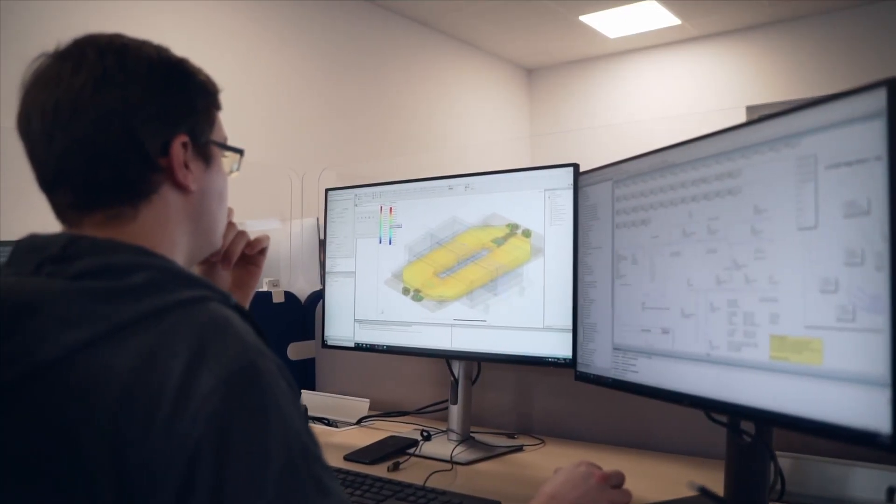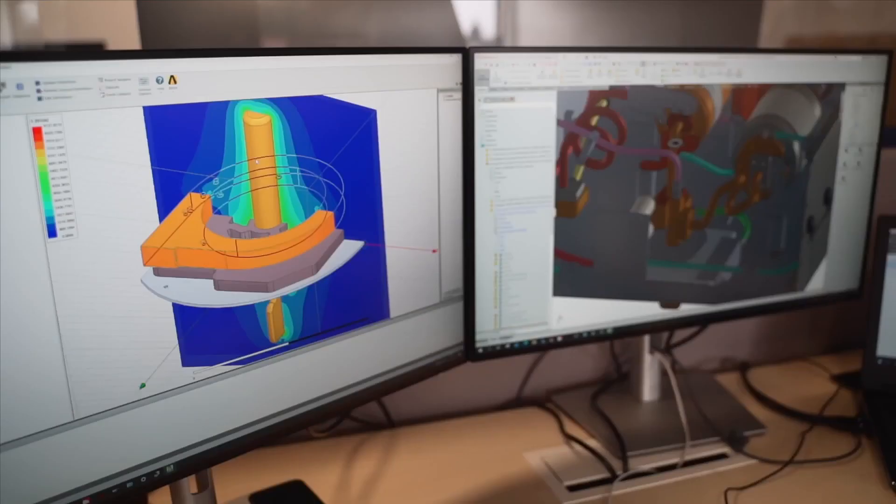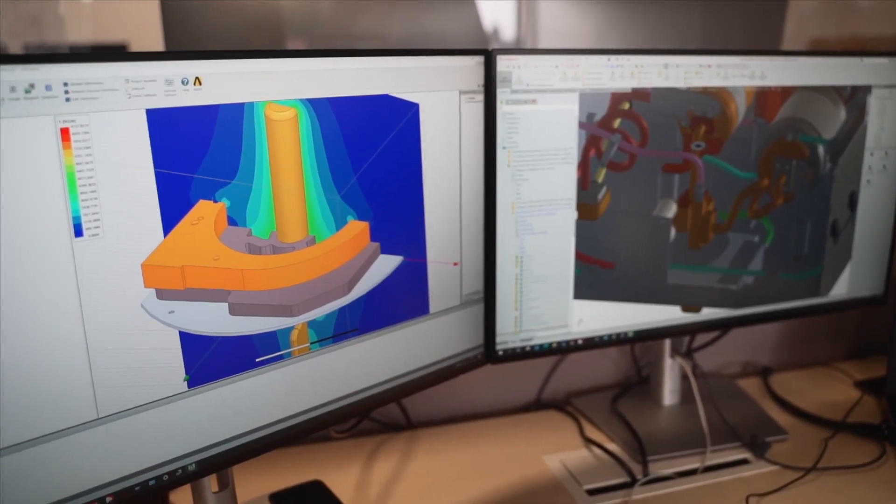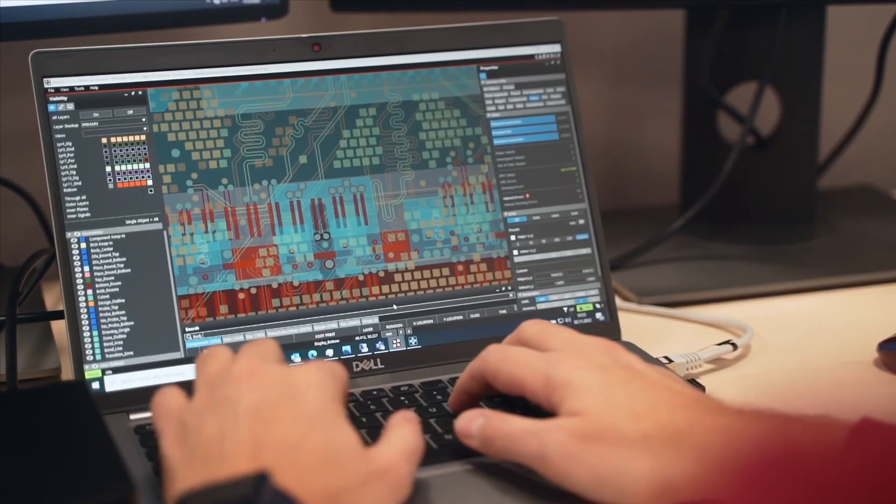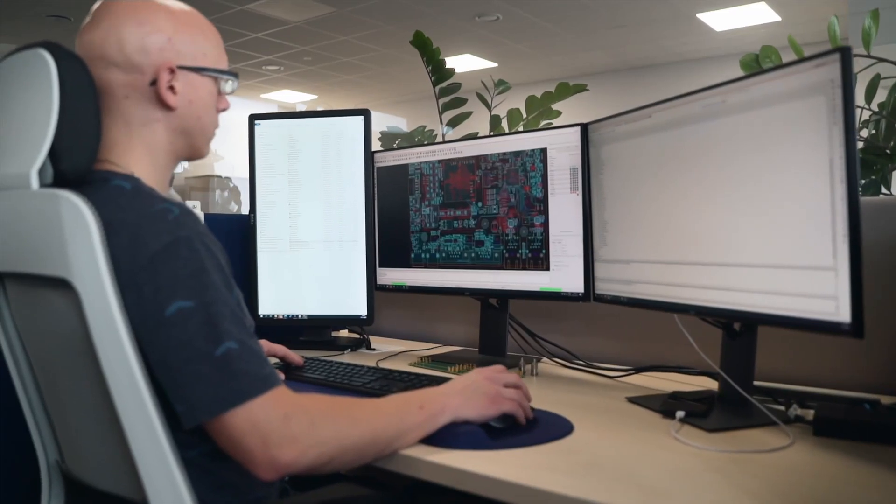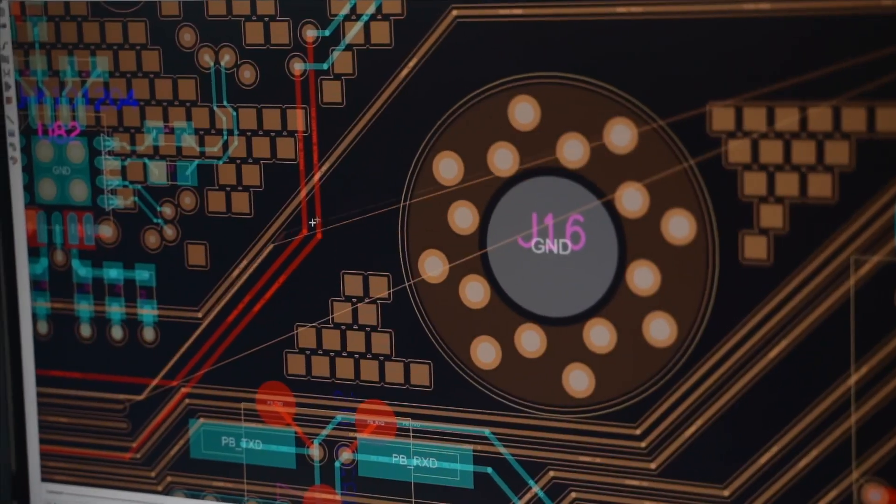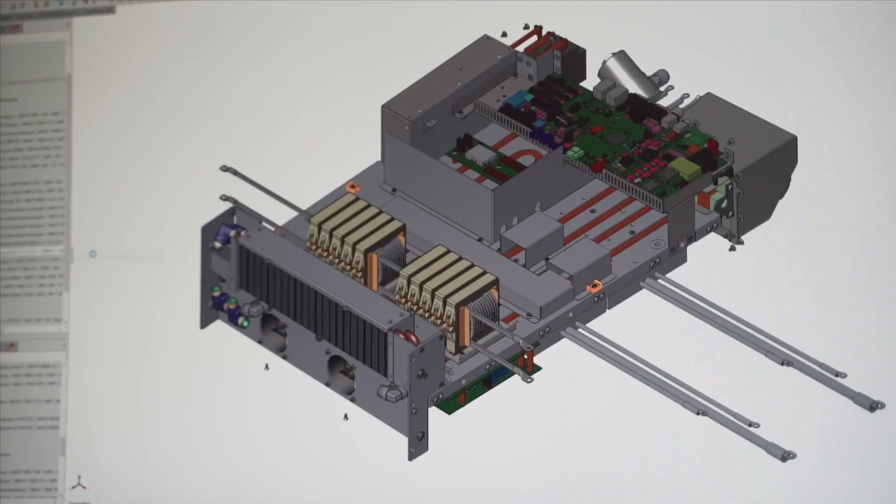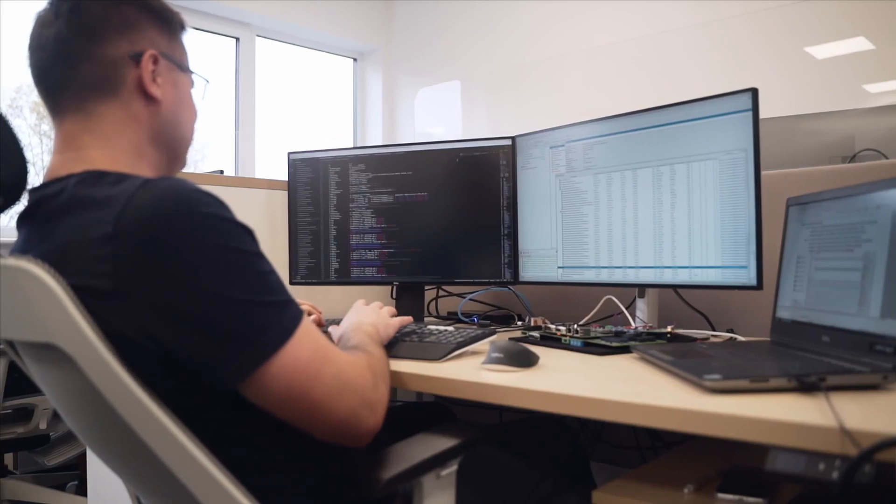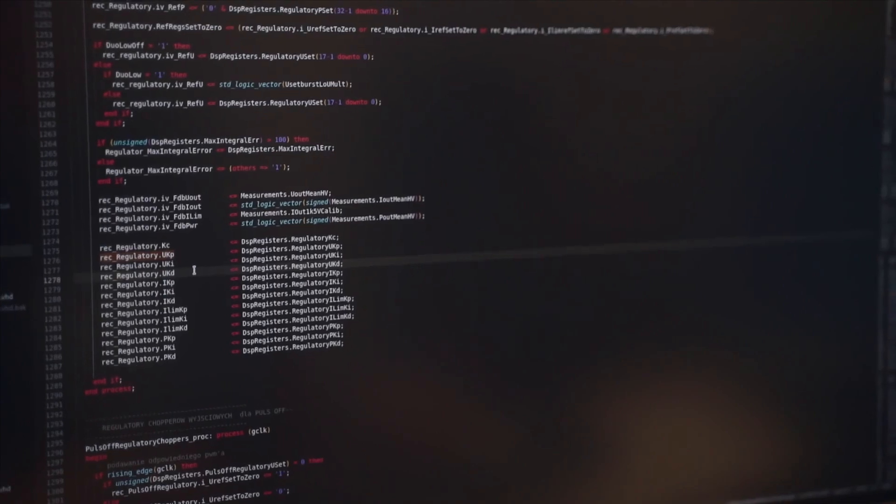Simulations of the electromagnetic field or coolant flows are then carried out to check whether the design corresponds to the assumed parameter set. When the design is ready, work begins on the device prototype. At this stage, the printed circuit boards and the mechanical design of the device powering the plasma process are created. At the same time, engineers are working on control as well as regulation and measurement algorithms that will allow the plasma processes to be carried out.